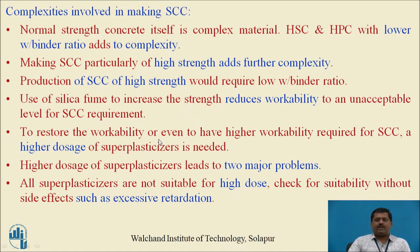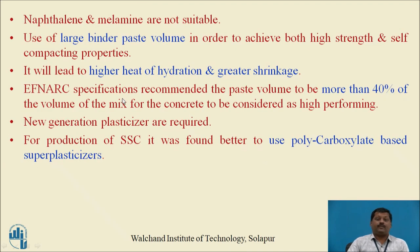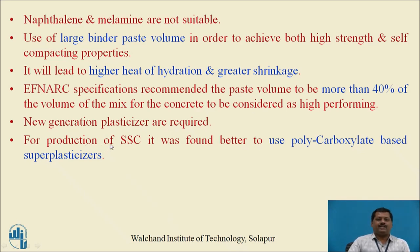To restore workability, a high dosage of superplasticizer is needed, but this creates two problems: not all superplasticizers are suitable for high doses, and the side effect is excessive retardation. FNAR specification recommends paste volume to be more than 40% of the total volume, which requires higher powder content and a new generation plasticizer — specifically polycarboxylate-based superplasticizers — to disperse the concrete, adding cost to self-compacting concrete.